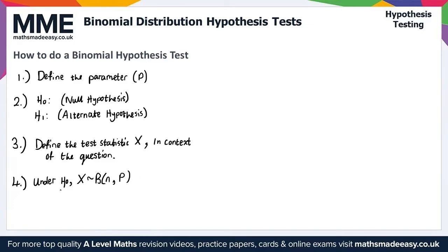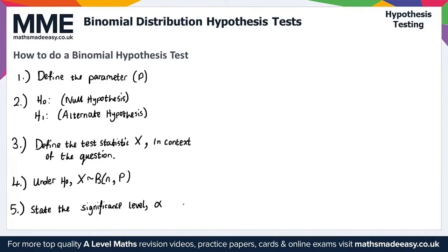Step five: state the significance level. The significance level is given in the question, but we should state it anyway to avoid any risk of losing marks. We use the Greek letter alpha to represent the significance level.